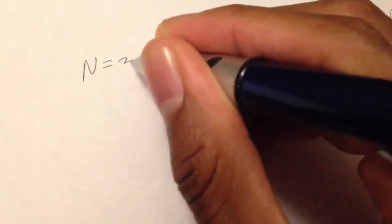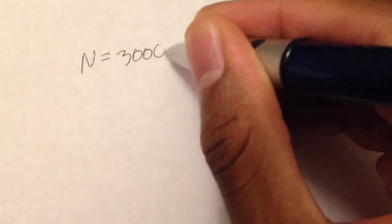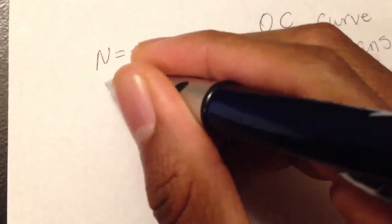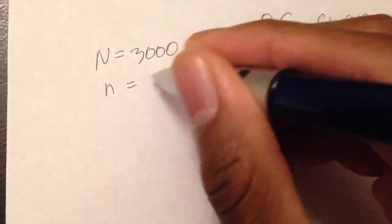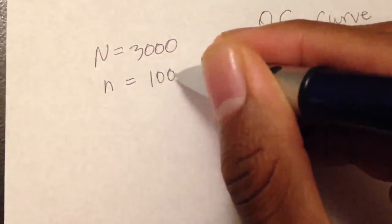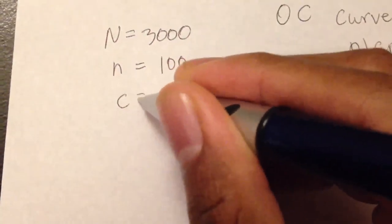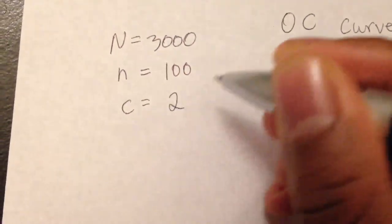Usually when writing an OC curve they give you an N value. So let's just have an N value of say 3000. Sample size would be 100. 100 is a nice easy number and the acceptance number is let's say 2.